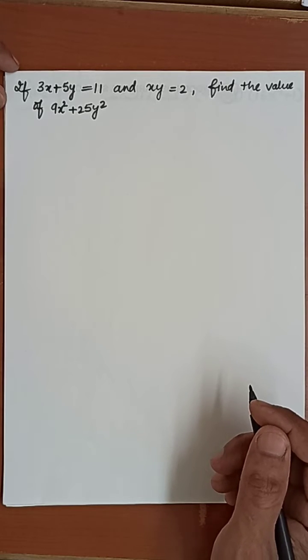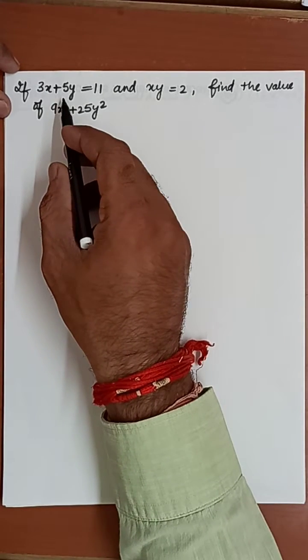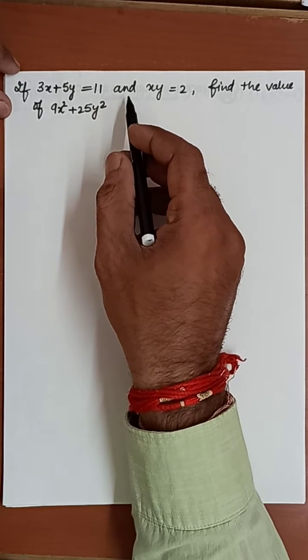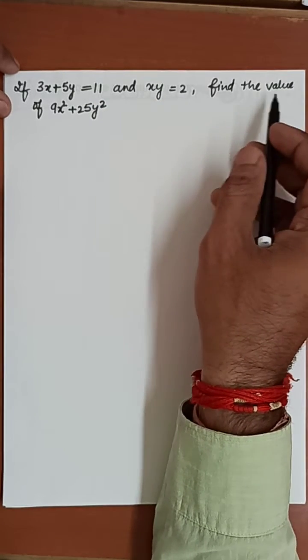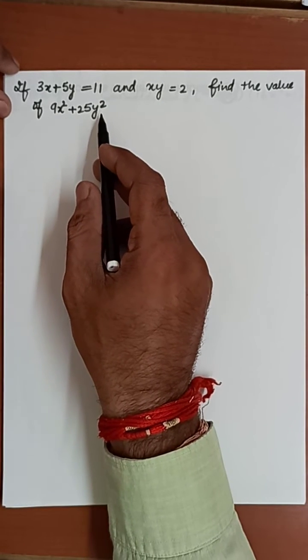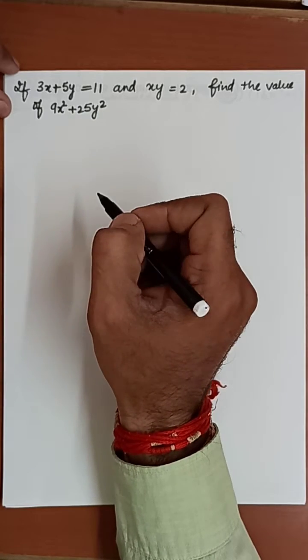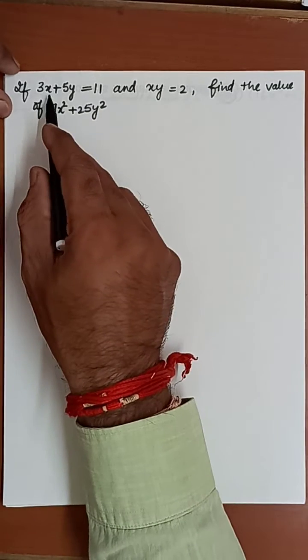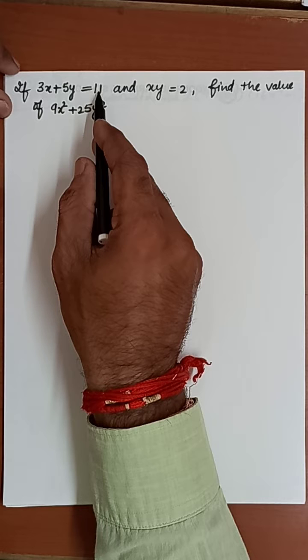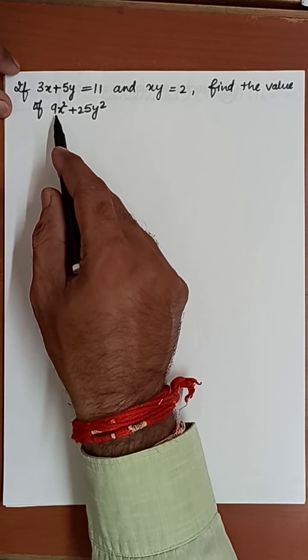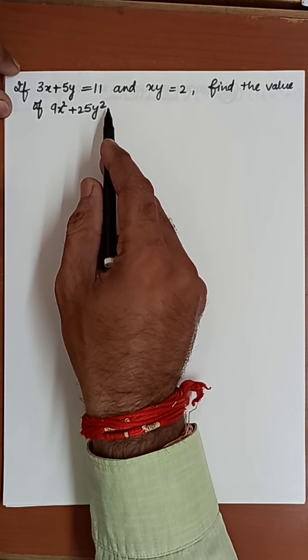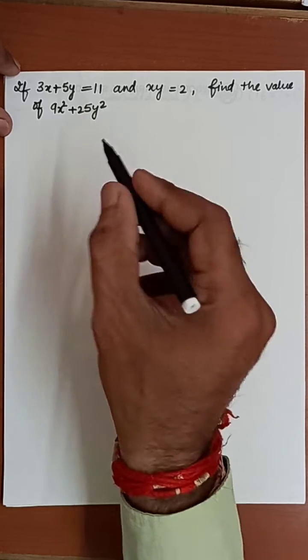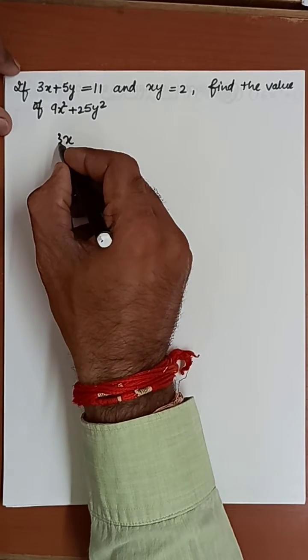Hello students, let's see this question. If 3x plus 5y equals 11 and xy equals 2, find the value of 9x square plus 25y square. So as the question is given, 3x plus 5y equals 11, and we have to find the value of 9x square plus 25y square.